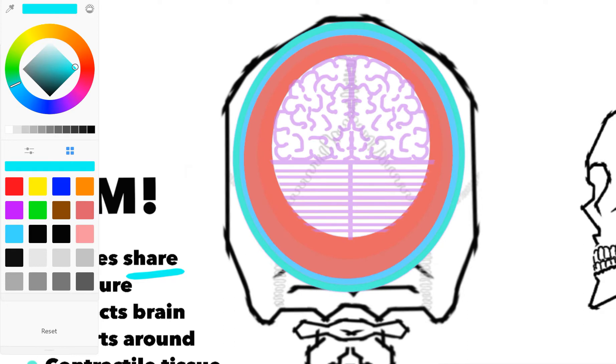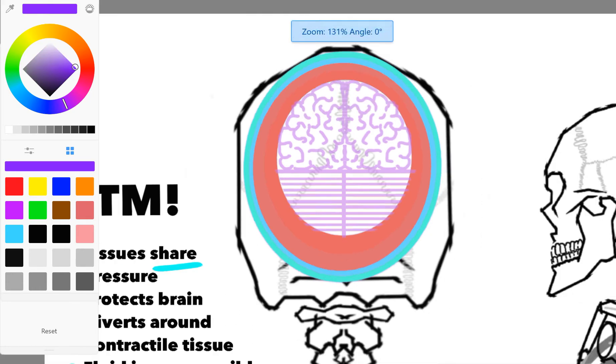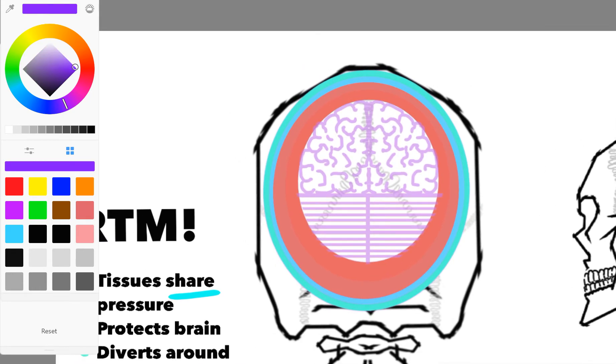The meninges surround that, so we want to protect that brain from any kind of trauma. Any impact traumas coming in from the outside would be potentially disastrous to that brain.